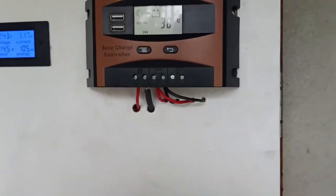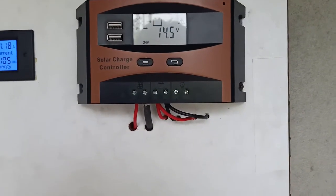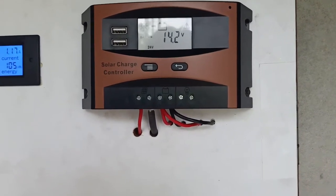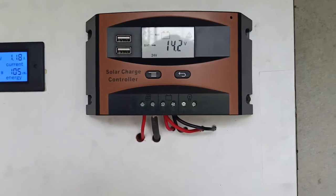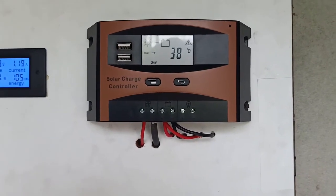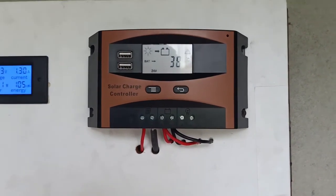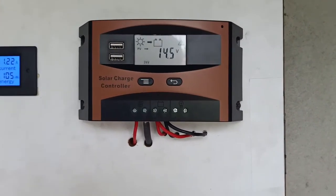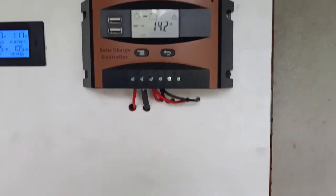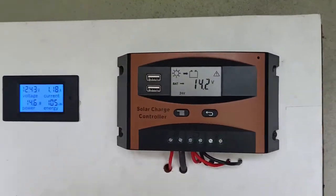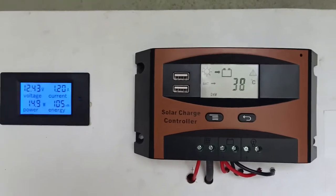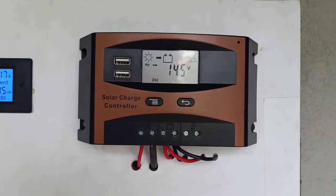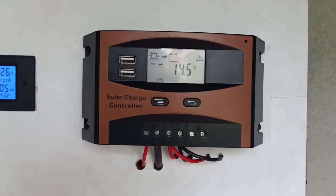Now I show the system settings, how to change parameters. On this screen, you can see this is temperature, this is battery voltage, and this is solar panel voltage.